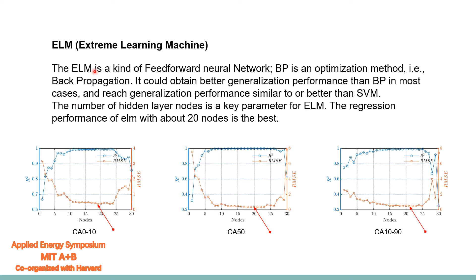This is the ELM, namely the extreme learning machine. It is a kind of feed-forward neural network. The backpropagation algorithm (BPA) is the optimization and training method. It can obtain better generalization performance than BP in most cases, with regression performance similar to or better than SVM. The effect of the number of hidden layer nodes on regression performance of ELM shows that about 20 nodes gives the best performance.